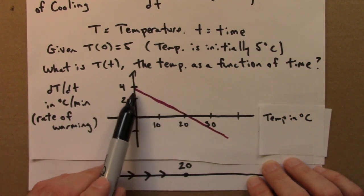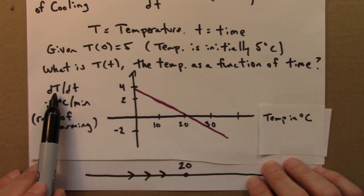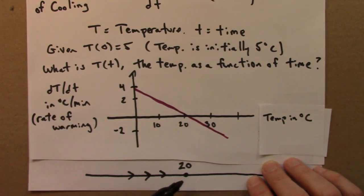The graph, which we interpret as the derivative, is positive. That means that capital T, the temperature is increasing, so we move this way. It increases until we get to 20.